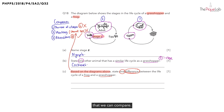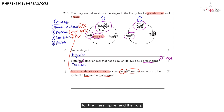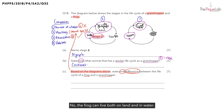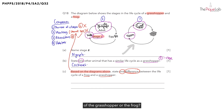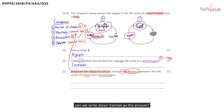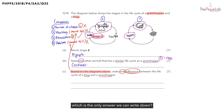There is actually a fourth way we can compare: we can compare their habitats. The grasshopper lives on land, while the frog can live both on land and in water — so this is also a difference. But can we write this down as the answer? No. Based on the diagrams given, we are not able to tell what the habitat of the grasshopper or the frog is. So out of these four different ways of comparison, the only answer we can write down is about resemblance.